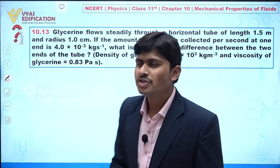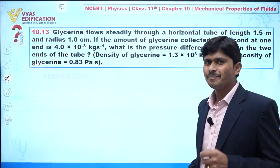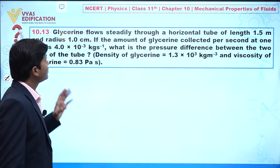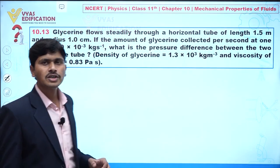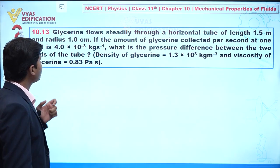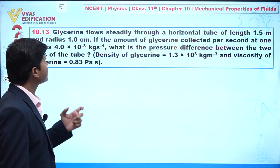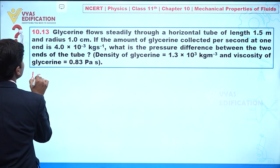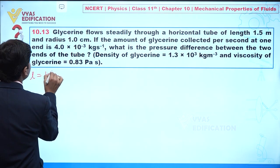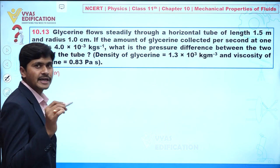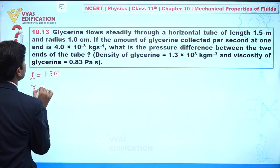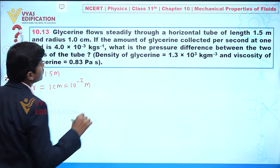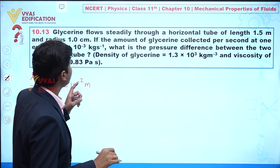We are going to discuss question number 10.13. In this question, it is given that glycerin flows steadily through a horizontal tube of length 1.5 meter and radius 1 centimeter. The length of the tube is 1.5 meter and the radius r is 1 centimeter, which equals 10 to the power minus 2 meter.